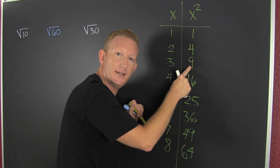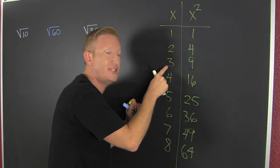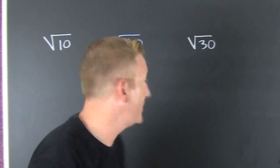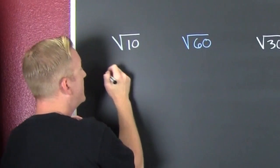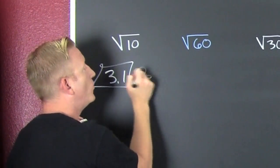But is 10 bigger than 9 or smaller than 9? It's bigger than 9. So it's gonna be just a little bit bigger than 3. What's gonna be bigger than 3? The square root of 10. I'm gonna say it's about 3.1.